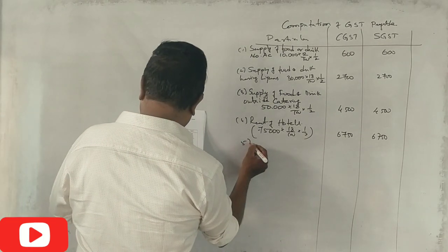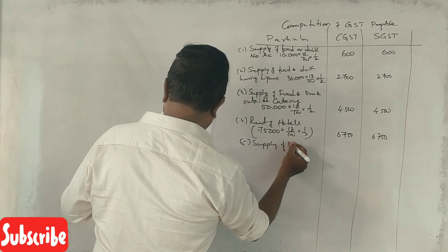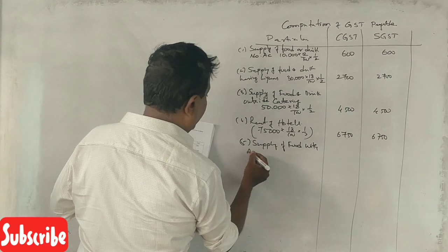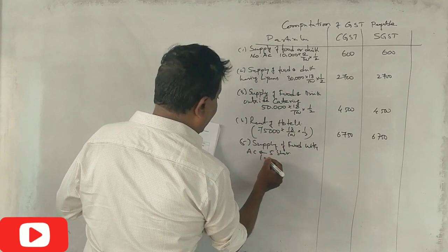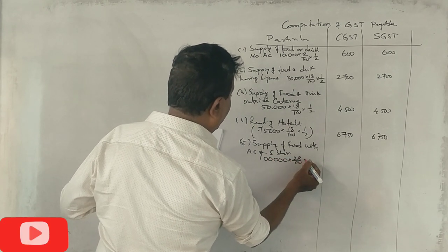Supply of food with AC and 5 star. 1 lakh into 28%, 50,000.